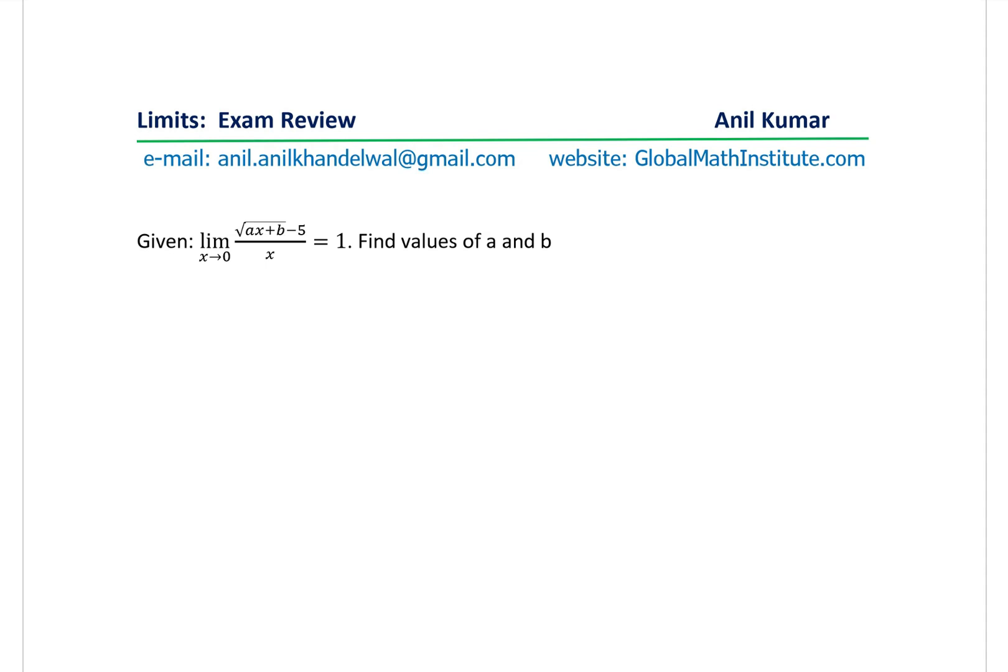Now here is a very important concept which we should understand before answering this question. In this particular case, if I substitute 0 here, we get square root of 0 plus b minus 5 over 0.